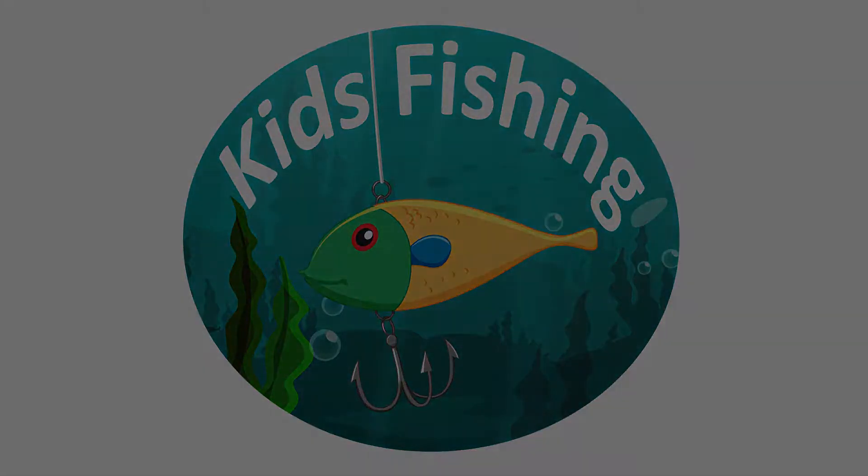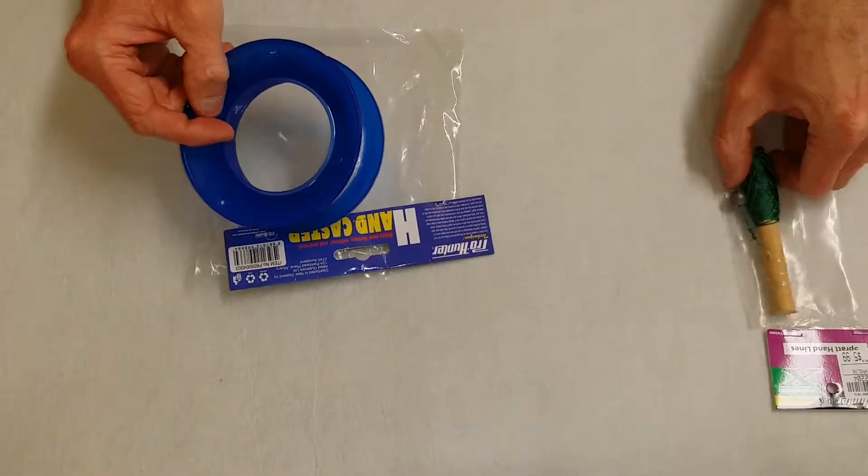Welcome to Kids Fishing. In this episode of Kids Fishing Tackle, we're looking at hand lines, a very cost-effective way for kids to start fishing. So let's look at a couple of options. We've got two little hand lines here.